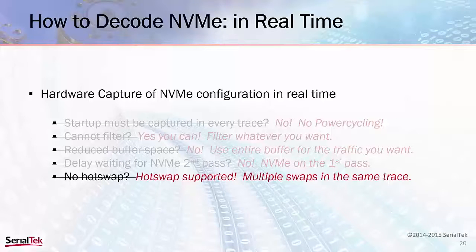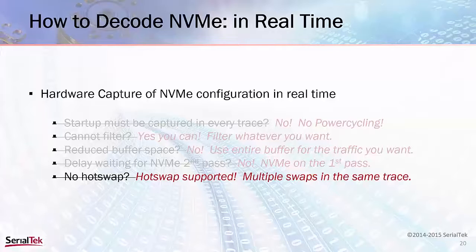Do we support hot swapping? Absolutely. Not only do we support hot swapping, but multiple hot swaps can be performed in a single trace. The hardware is tracking this, and you can perform different hot swaps and then start capturing your trace. Or if you need to see the hot swap events in your trace, you can start hot swapping after you've started capture. Either way, the decodes for your specific devices will all be present in the hardware archive and will all be decoded correctly in your trace.